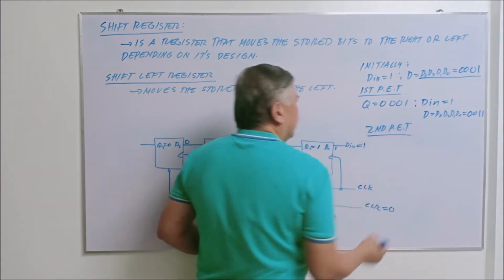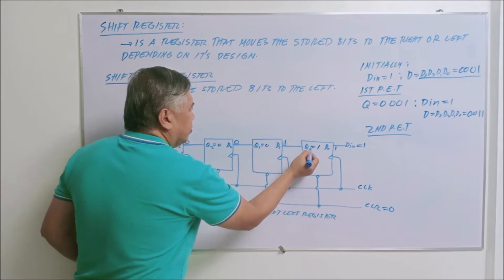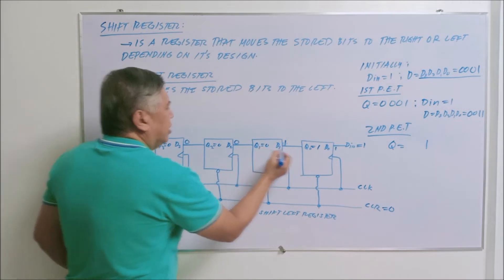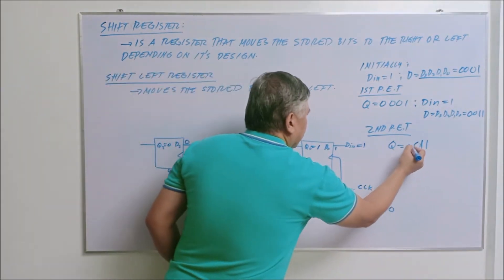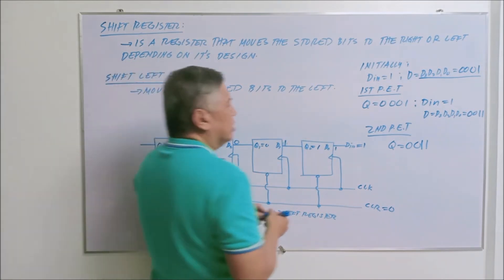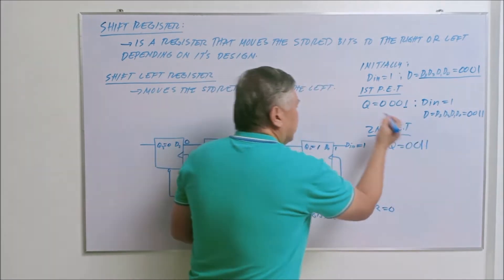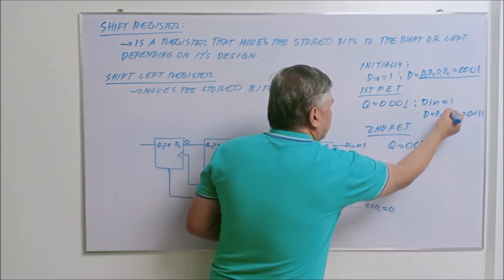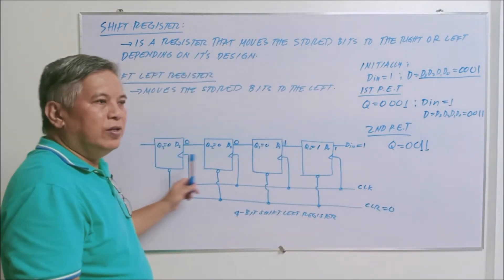When the second positive edge triggering of the clock comes, again D implies Q — the value of D will be stored. Q sub zero will be one, then that one here will be stored, so Q sub one will be one. This one will be stored — Q sub two will be zero — and Q sub three will also be zero. If you notice, the value of your D input which started here is now moving to the left of your four-bit shift left register.